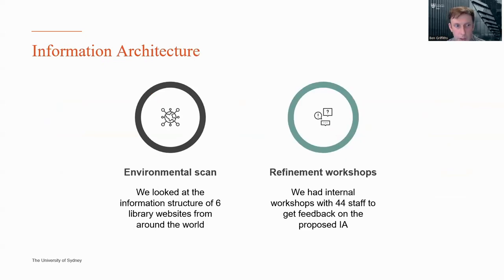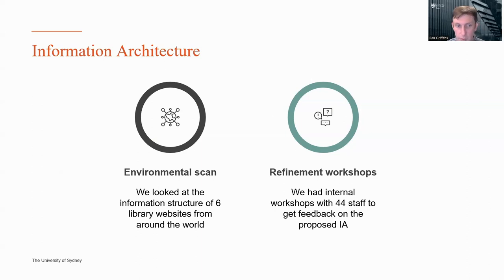In terms of information architecture, we did an environmental scan, looking at six different library websites from around the world to analyse what structure seemed to work well and what didn't. That informed how we proposed our own structure. Once we had a proposed structure, we ran refinement workshops with 44 staff to get their feedback, because they had a good sense of what needed to be included and whether things were consistent based on their understanding of what we do.